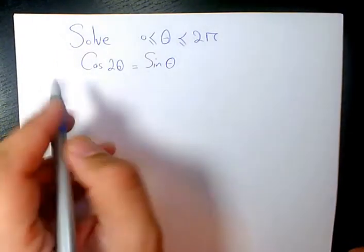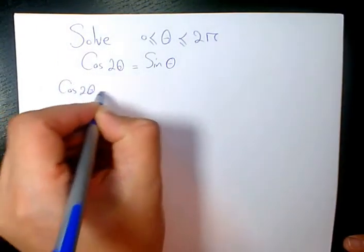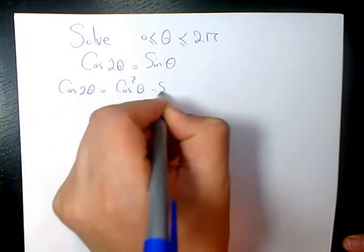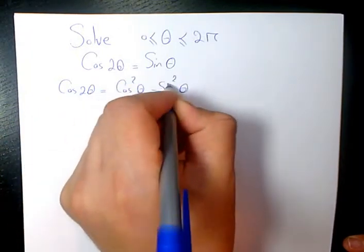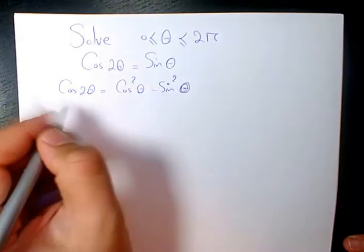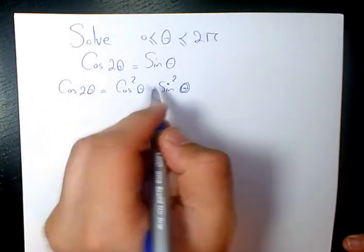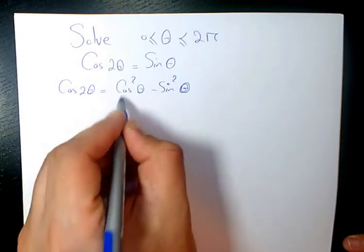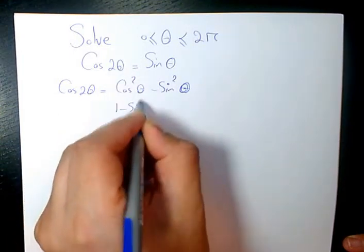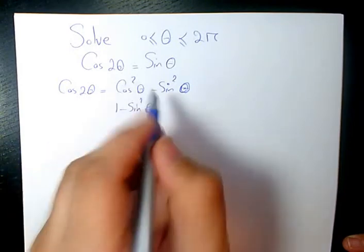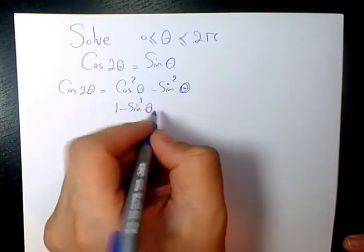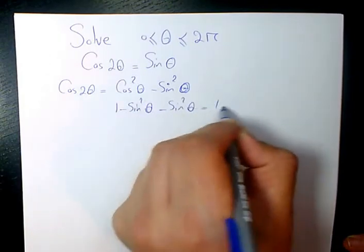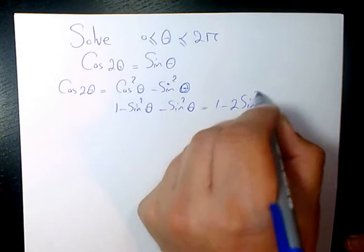The first thing I want to do is use the double angle formula for cosine. We know it's cosine squared theta minus sine squared theta. If you want to get rid of the cosine squared, instead of that I can write 1 minus sine squared theta, because sine squared plus cosine squared is 1. So 1 minus sine squared minus sine squared theta is going to be 1 minus 2 sine squared theta.